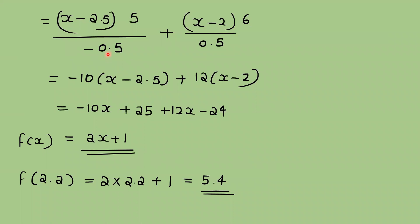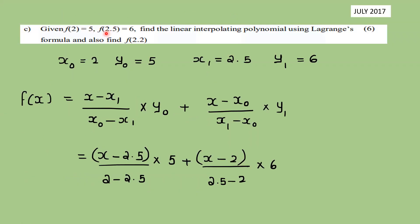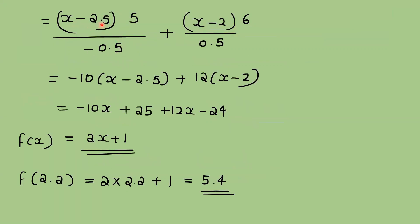Simplifying: (x - 2.5)·5 / (-0.5) + (x - 2)·6 / 0.5. Since 5/0.5 = 10 and 6/0.5 = 12, this becomes -10(x - 2.5) + 12(x - 2) = -10x + 25 + 12x - 24 = 2x + 1. Therefore f(x) = 2x + 1, and f(2.2) = 2(2.2) + 1 = 5.40.